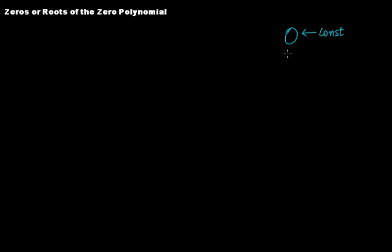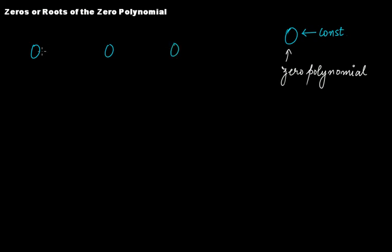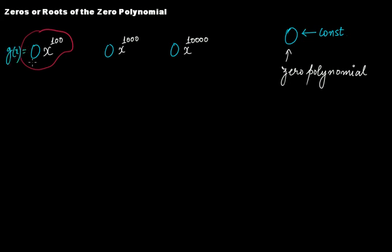What about the zero polynomial? This is a special kind of constant polynomial called the zero polynomial. Now in the case of the zero polynomial, let's write this as zero — we can write it as zero multiplied by x raised to the power of 100, or zero multiplied by x raised to the power of 1000, or zero multiplied by x raised to the power of 10,000. Let's take one of these. Let's say g(x) is equal to this zero polynomial.